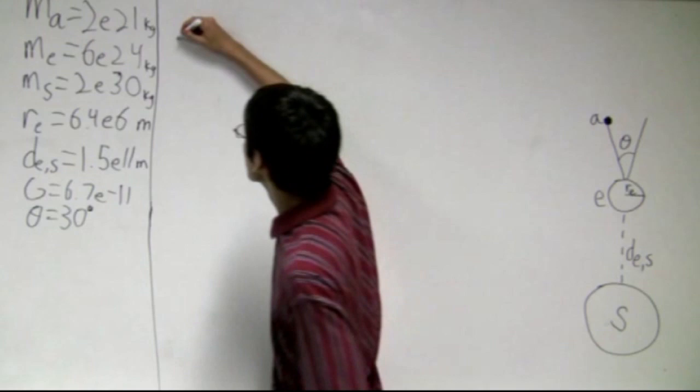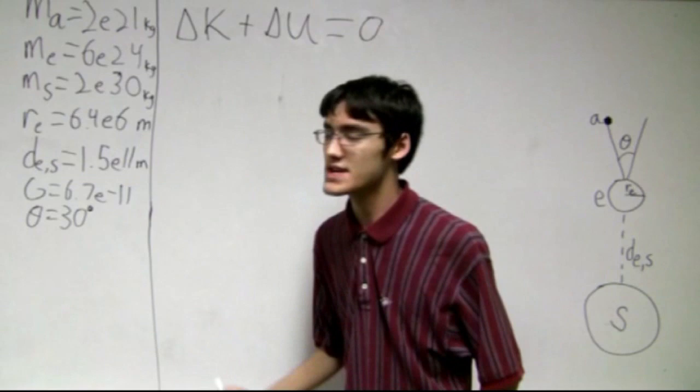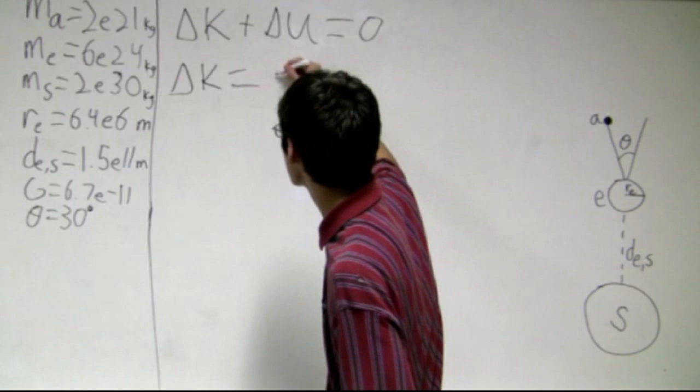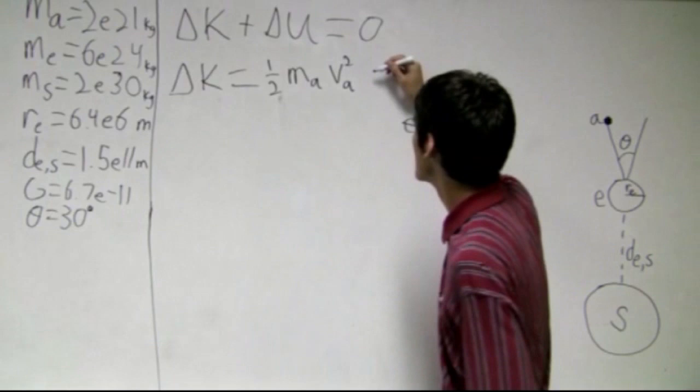Alright, so to find the speed of the asteroid as it hits the Earth, if we include everything in our system, we know that delta K plus delta U is equal to zero. Now, the delta kinetic energy is just going to be the final kinetic energy of the asteroid as it hits the Earth. So that's one-half mass of the asteroid, velocity of the asteroid squared, and this is equal to negative delta U.